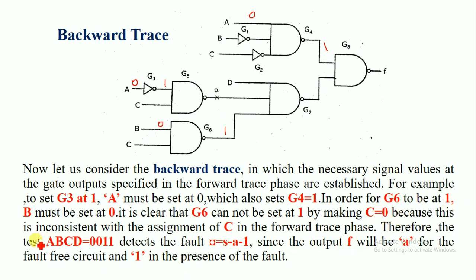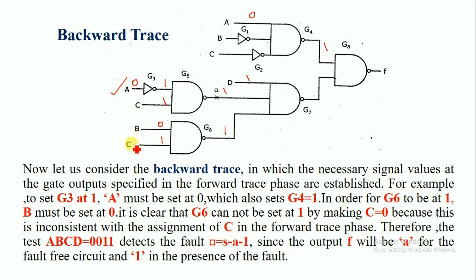Setting C to 0 would be inconsistent with the assignment of C in the forward trace phase. So C must equal 1, making G6 equal to 1, and D is also set to 1. The test inputs are therefore: A = 0, B = 0, C = 1, D = 1 — that is, the pattern 0011.